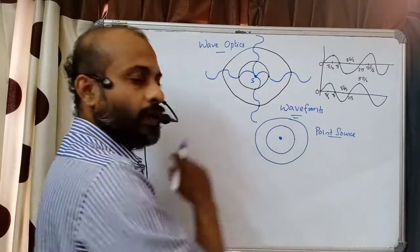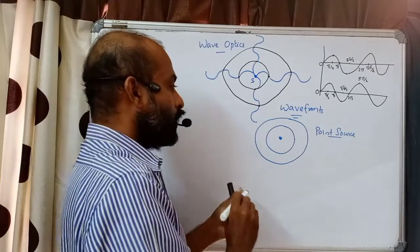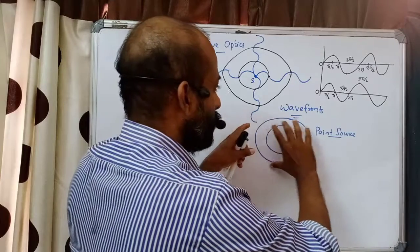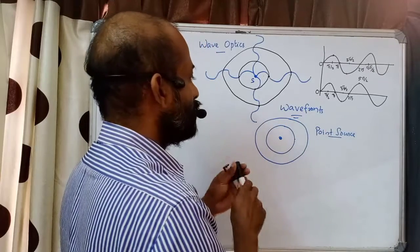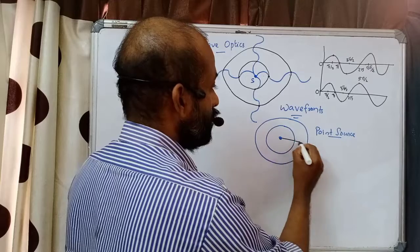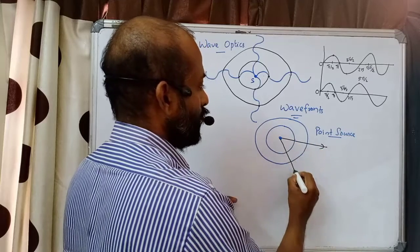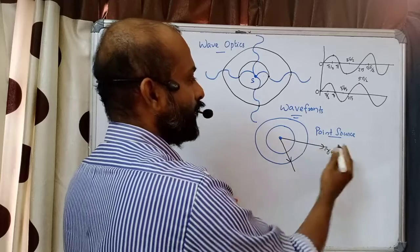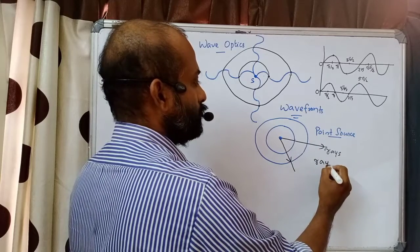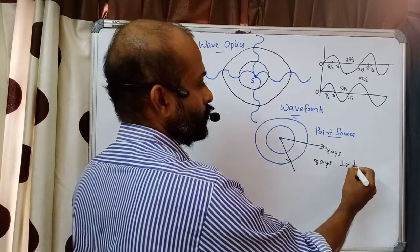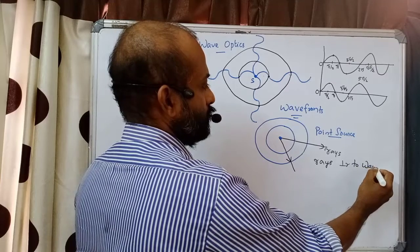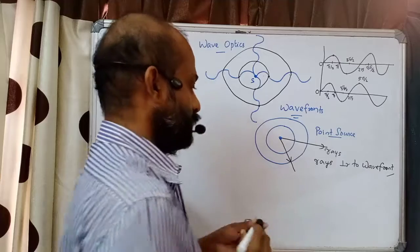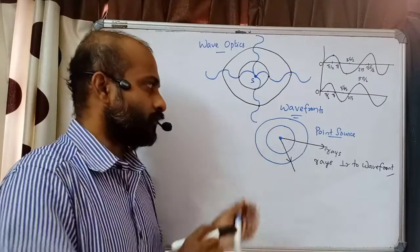I can indicate the direction of propagation — if this is the source of light, the wavefront is propagating outward. To indicate the direction of propagation we draw lines with arrow marks called rays. Rays are perpendicular to wavefronts — that's an important point: rays are perpendicular to wavefronts.